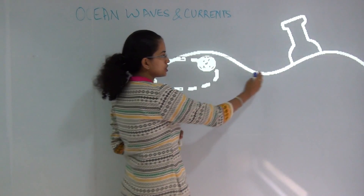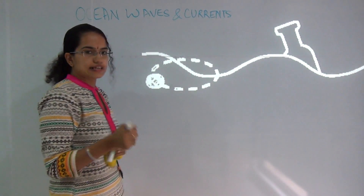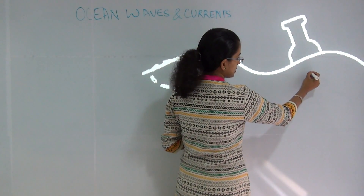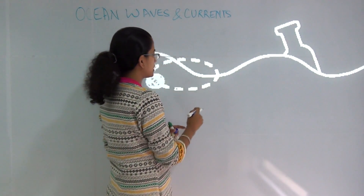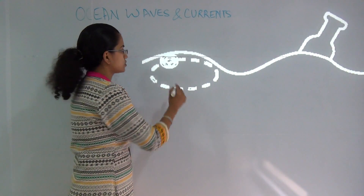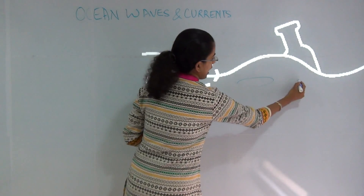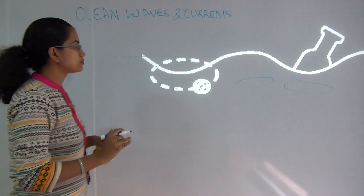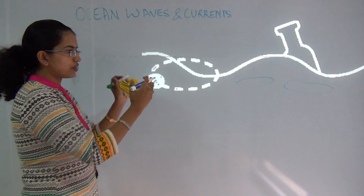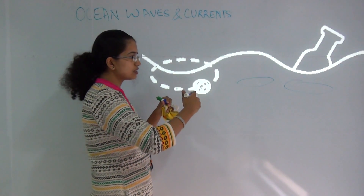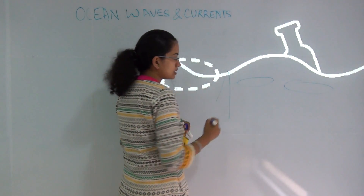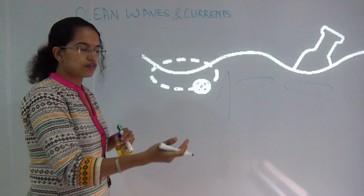As you go closer to the coast, the depth decreases. So the depth of the water decreases, and this wave pattern tends to become flatter and flatter. Towards the coast, since these waves become closer and closer, the height increases drastically. When the height of the waves increases, it finally leads to the breaking of the waves.